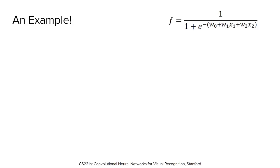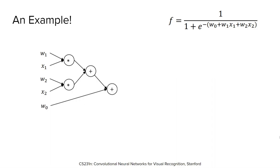Let's understand this more clearly using an example. We'll construct the computational graph of a function f shown on the slide and then backpropagate through the entire graph. First, we add a multiplication node to multiply w1 and x1, followed by another multiplication node to multiply w2 and x2. Then we add an addition node to add the results. Finally, we add another addition node whose output will be w0 plus w1*x1 plus w2*x2. Next, we add a node to multiply the result by minus 1, then a node to perform exponentiation, another node to add 1 to the result, and finally a node which performs the inversion operation. Now we have the complete computational graph.